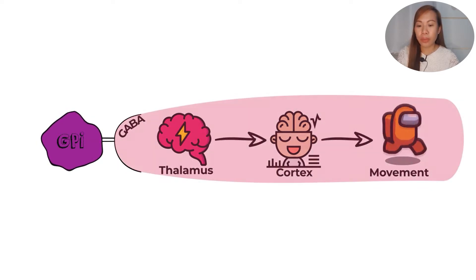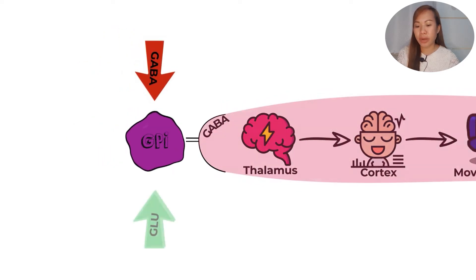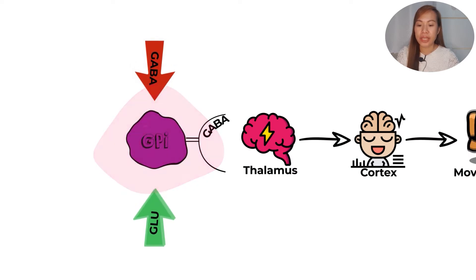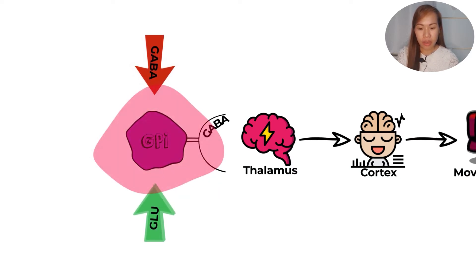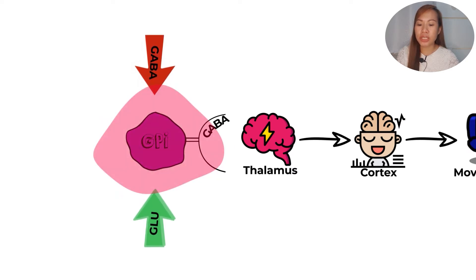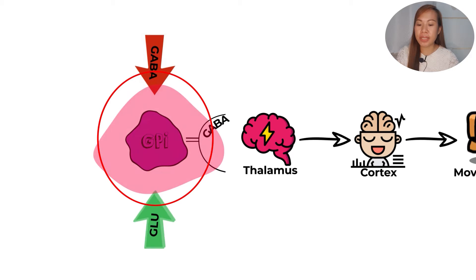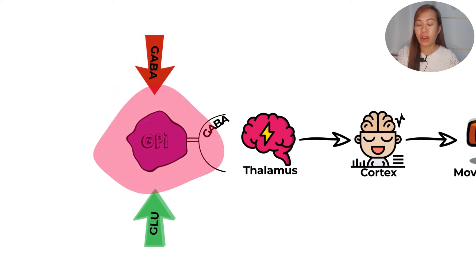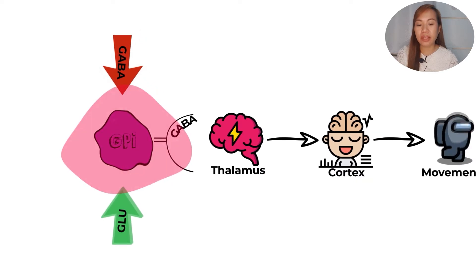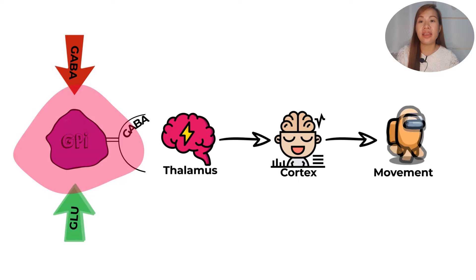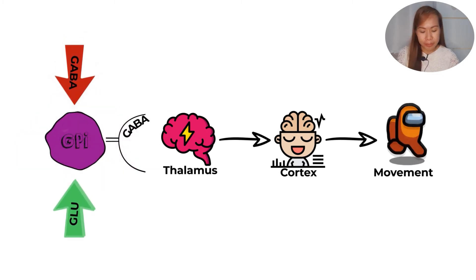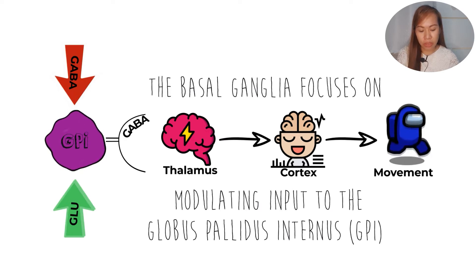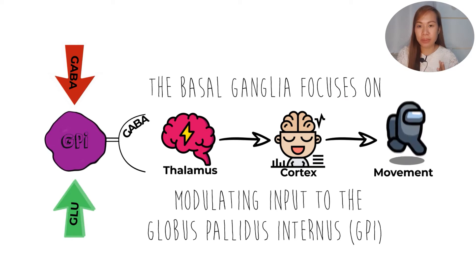Now, there are two neurotransmitters we need to understand. GABA is inhibitory while glutamate is excitatory. If there is GABA, the inhibitory neurotransmitter will inhibit the globus pallidus internus. If GPI is inhibited, it will not be able to produce GABA, and the thalamus will be activated — activating the cortex and producing movement. The basal ganglia focuses on modulating input to the globus pallidus internus — that is the focus of the basal ganglia.